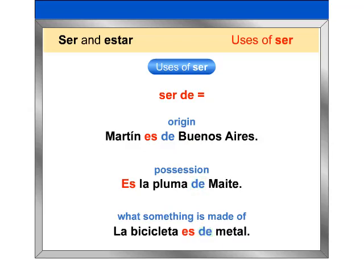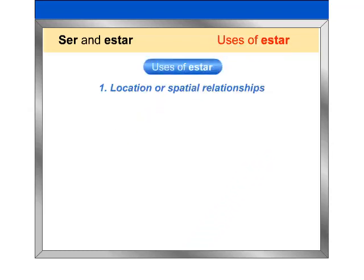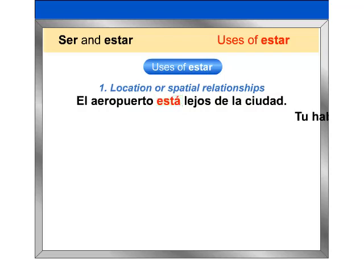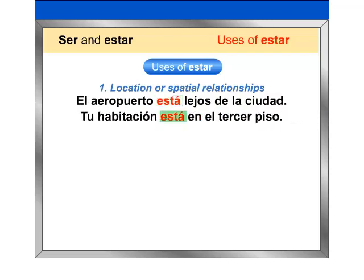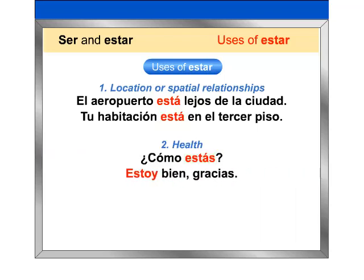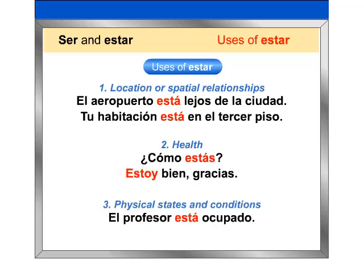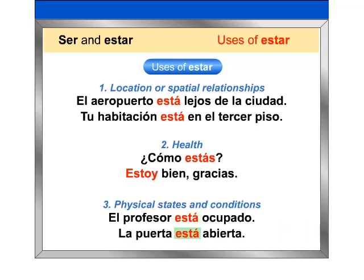Muy bien. Now let's review the uses of estar. 1. Location or spatial relationships: El aeropuerto está lejos de la ciudad. Tu habitación está en el tercer piso. 2. Health: ¿Cómo estás? Estoy bien, gracias. 3. Physical states and conditions: El profesor está ocupado. La puerta está abierta.